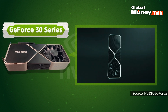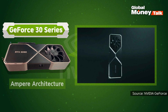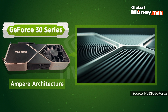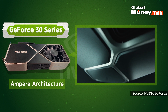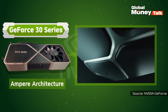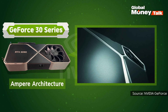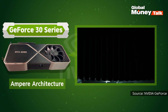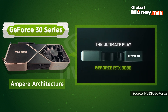That was followed by the GeForce 30 series, which included models such as the RTX 3080 and the RTX 3090, using the Ampere architecture, which had almost twice the efficiency and performance of Turing's. Graphics cards have become an indispensable technology today. We'll explore how NVIDIA became America's leading semiconductor company in the next video.